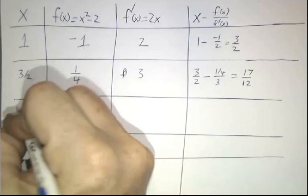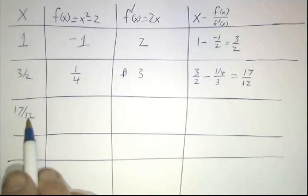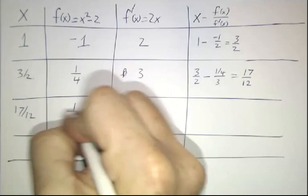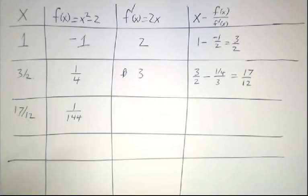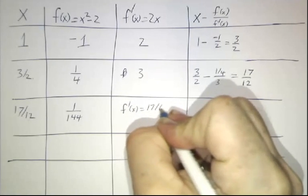Let's keep going. 17 twelfths. If you square that, you get 289 over 144, which is 2 and 1 over 144th. So we're getting pretty good. f prime is 17 sixths.